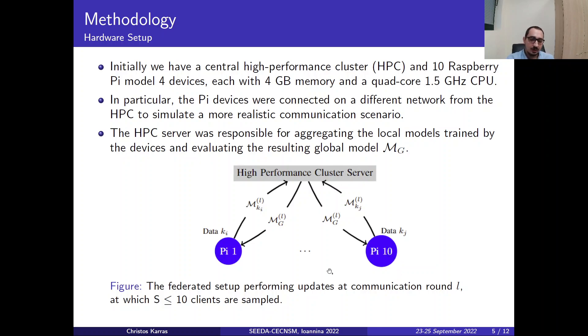And then we have the other devices up to the last one which is PI10 which holds data as KJ and the local model MKJ. And this is basically how the models are trained across each device and they exchange a local copy to the high-performance cluster server.